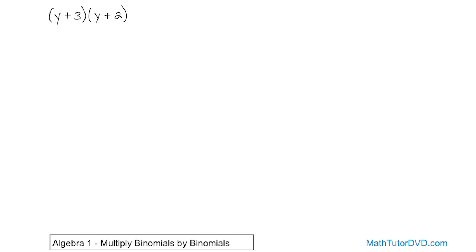Now pretend for a second that the 3 was not there at all. All you have out here is a y, and inside here y plus 2. How do you do that problem? You would take the y, multiply by y, and take the y, multiply by 2, distributing it in, and they would be added together because of the plus sign. So separately the 3 gets distributed in, and separately the y gets distributed in.